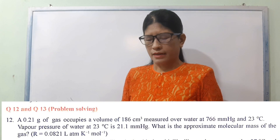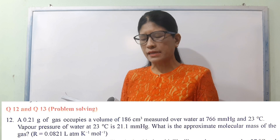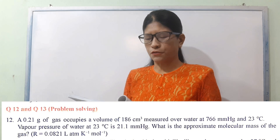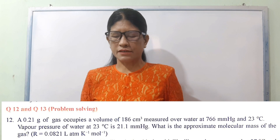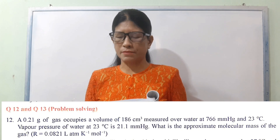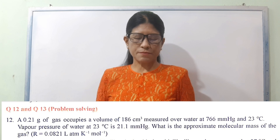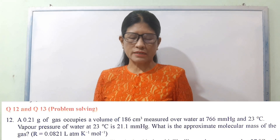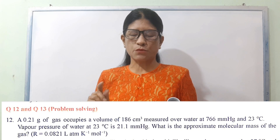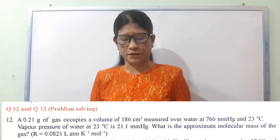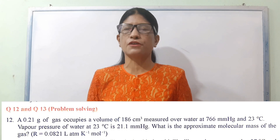Number 12. A 0.21 g of gas occupies a volume of 186 cm³ measured over water at 766 mm mercury and 23 degrees Celsius. The vapor pressure of water at 23 degrees Celsius is 21.1 mm mercury. What is the approximate molecular mass of the gas?